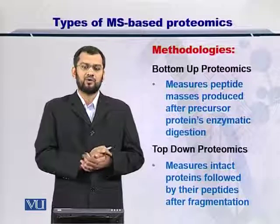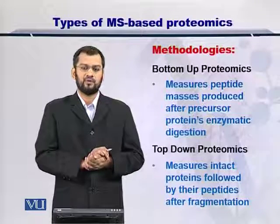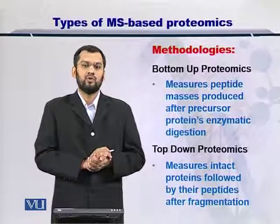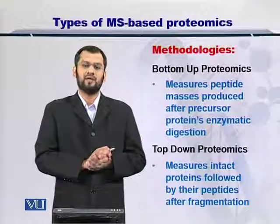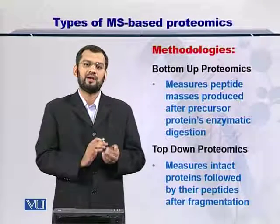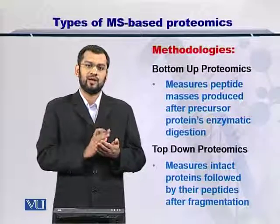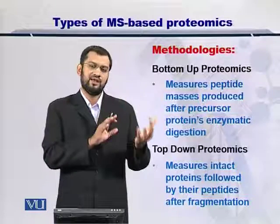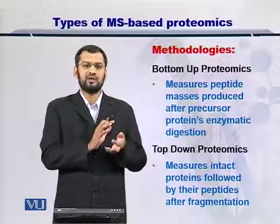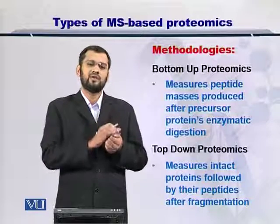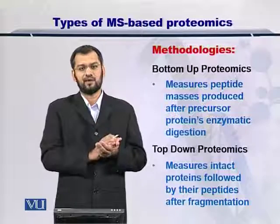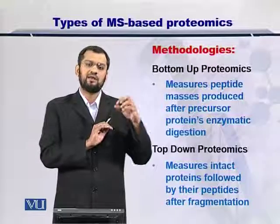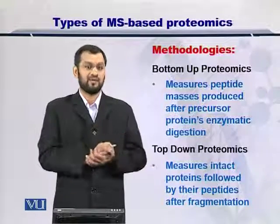The second approach is the top-down proteomics approach, which is a more modern approach. In top-down proteomics, whole proteins are first measured for their molecular weight. Once you have measured the molecular weight, the protein is then fragmented into its peptides — not using an enzyme, because the protein is already in the chamber of the mass spectrometer and you cannot treat it with an enzyme there. Therefore, there are other strategies to fragment the protein. Once you have measured the mass of the whole protein and fragmented it, you can then measure the molecular weight of the fragments as well.